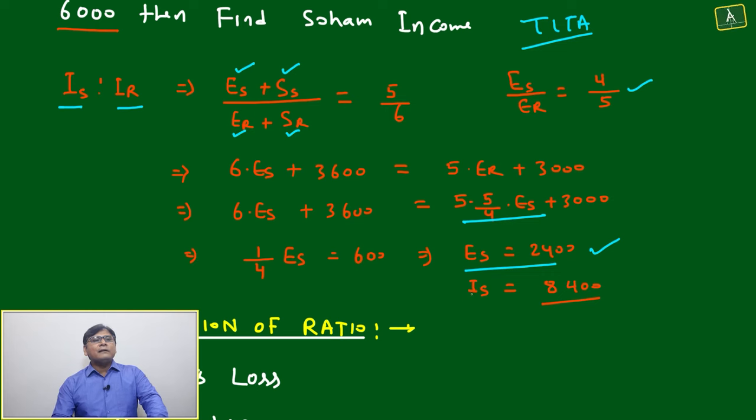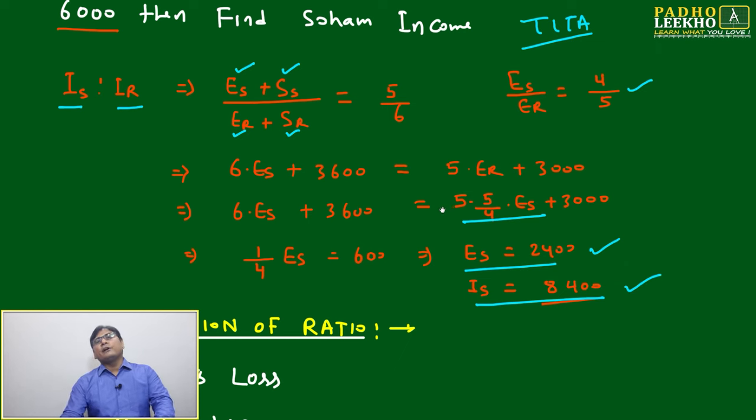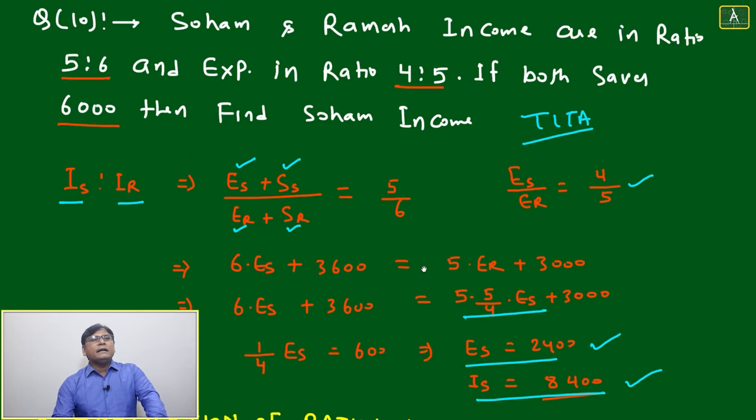Es equal to 2400. Anyway, they are both saving 6000 rupees, then income will equal 2400 plus 6000, which will come to 8400. The income of Soham will be 8400.